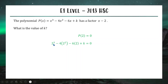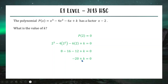We know that when we let x equal 2 in this polynomial, the answer should equal 0, and we can solve for k. Subbing in and changing all x's to 2's: we get 8 here, 16 here, and 12 here, still with k on the end. Combining: 8 minus 16 minus 12 equals minus 20, so minus 20 plus k equals 0, therefore k equals 20.